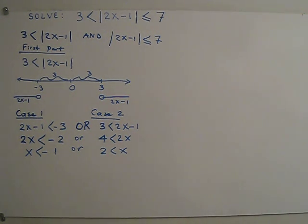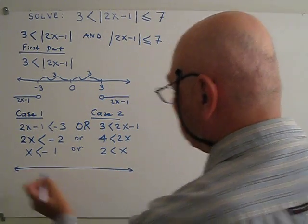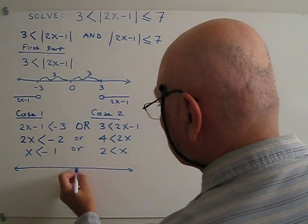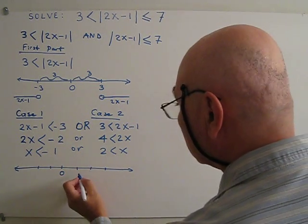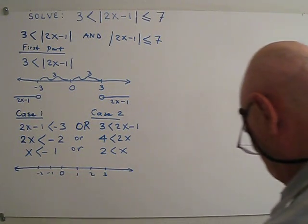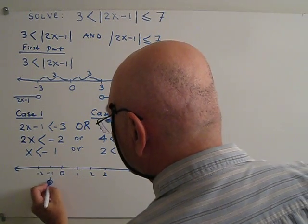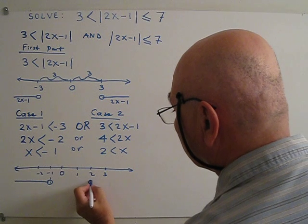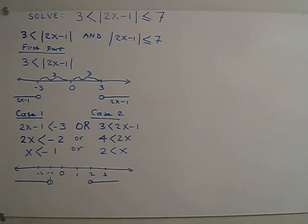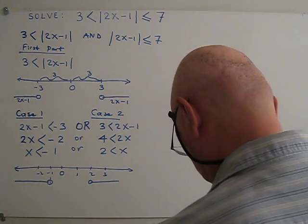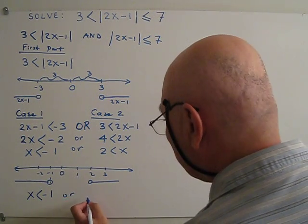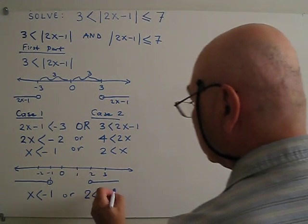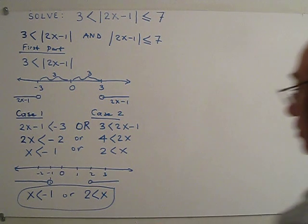This will be case 2. So if I combine case 1 and case 2 on a number line, with origin, negative 1, 2 — the result is: x less than negative 1, or x greater than positive 2. This is the result for the first part.